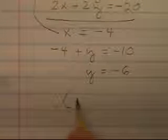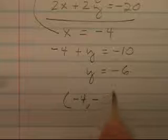The answer written as an ordered pair is negative 4 comma negative 6.